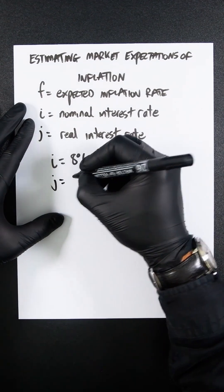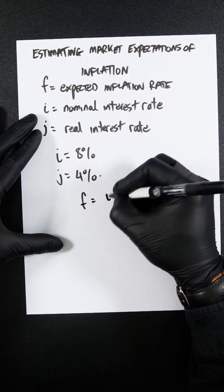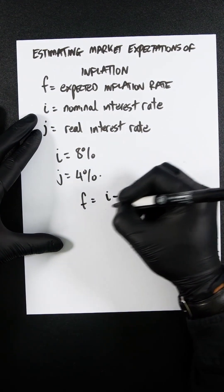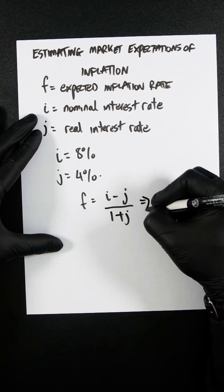And let's take j to be 4%. The equation that you're going to use is going to be f equals i minus j over 1 plus j. So if we now plug this all in,